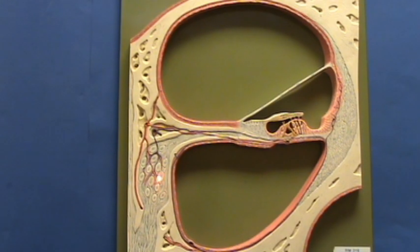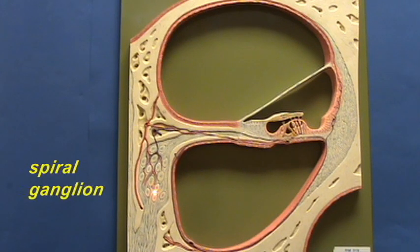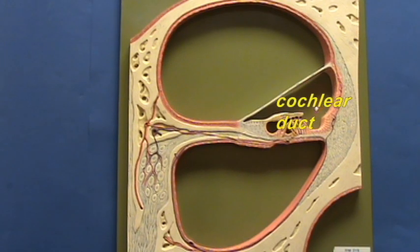Right over here, this would be the internal hub of the spiraling cochlea. This is where you have the structure called the modiolus, and we're going to find spiral ganglia within the modiolus. Right over here, we have the cochlear duct. The cochlear duct is going to contain endolymph.